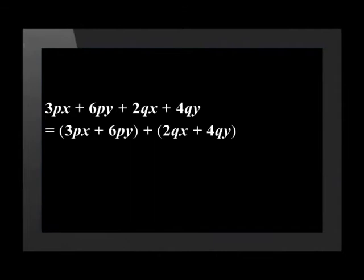Remember that whenever an expression is grouped, a plus must be put between the brackets. The highest common factor of the first bracket is 3p, and the second bracket term has a common factor of 2q.